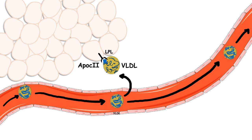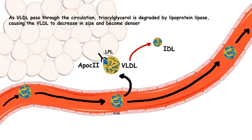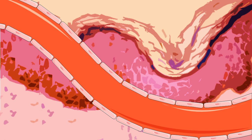As VLDL deposits fatty acids into adipose tissue, it becomes deficient in triglyceride. The intermediate compound that has less triglyceride, a moderate amount of cholesterol, and a small amount of proteins is known as intermediate density lipoprotein, or IDL. Notice that these particles have also reduced in size.